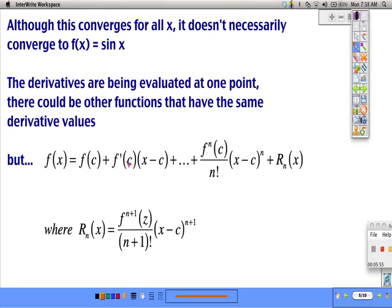These derivatives are being evaluated at one specific point, and there could be other functions that have the same derivative values. But we do know that regardless of what it's converging to, the function can accurately be given by this Taylor series plus a remainder. If it isn't converging to sine of x, it's going to be off by some amount. This remainder is the n plus first derivative evaluated at z over n plus 1 factorial, x minus c to the n plus 1. This is something we did when we were looking at Taylor and Maclaurin polynomials, the remainder term.